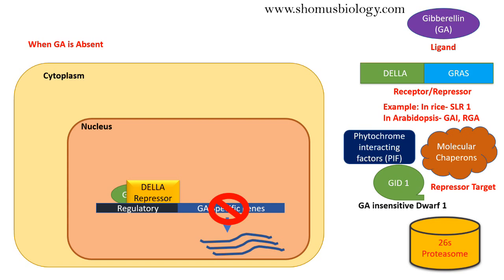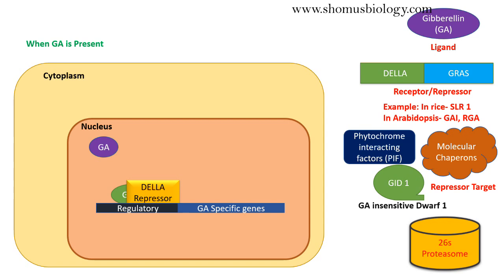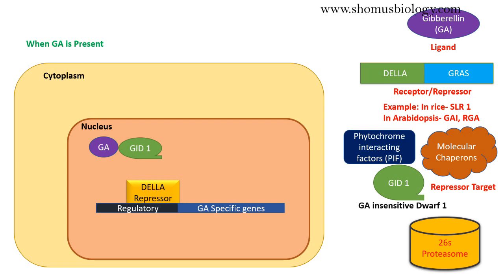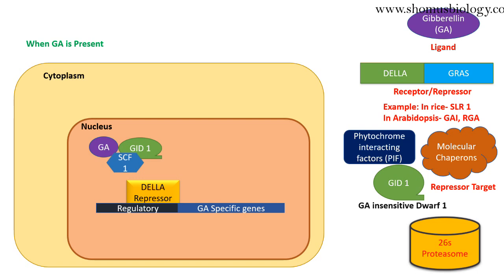Now when gibberellic acid is present, it goes directly inside the nucleus. The gibberellic acid binds to GID1 — including some that are already bound to the DELLA repressor. Once gibberellic acid associates with GID1, it recruits another protein from the F-box, which is the SCF complex. This SCF complex acts as an F-box complex protein involved in the poly-ubiquitination of target proteins, causing 26S proteasome-mediated degradation.